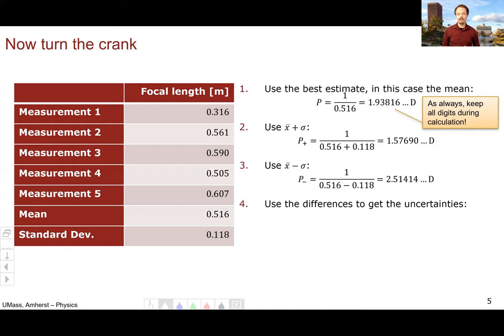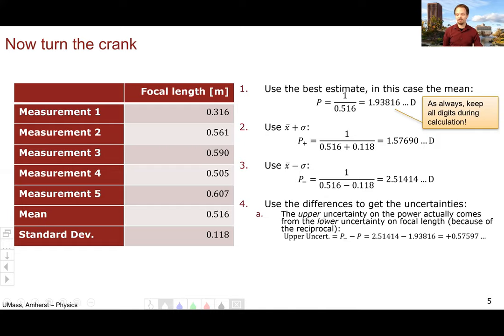Now we've done our three cranks, and we can use the differences to get the uncertainties. Upper uncertainty on power actually comes from the lower uncertainty on focal length, which may seem counterintuitive until you think about the mathematical relationship. It's reciprocal, so a big number in the denominator makes a smaller number.